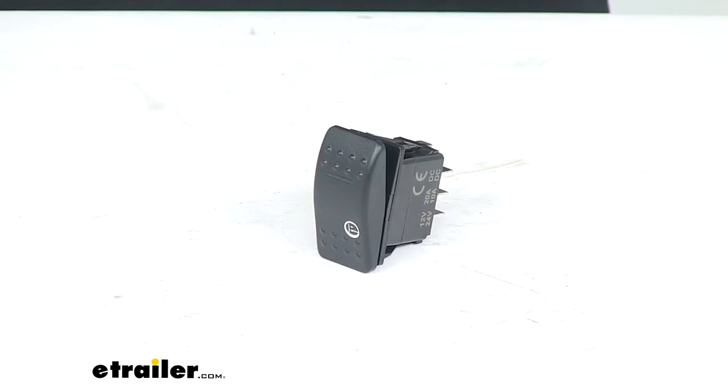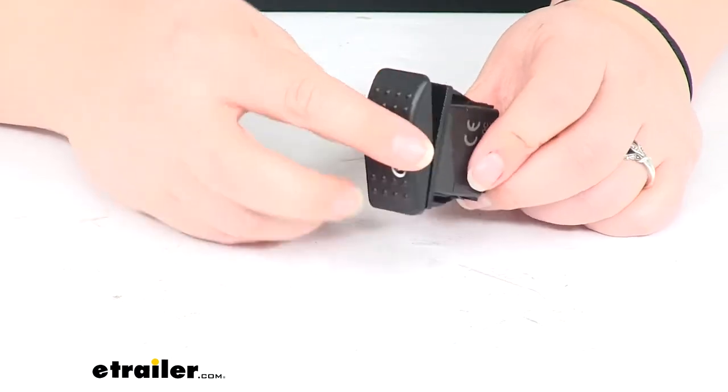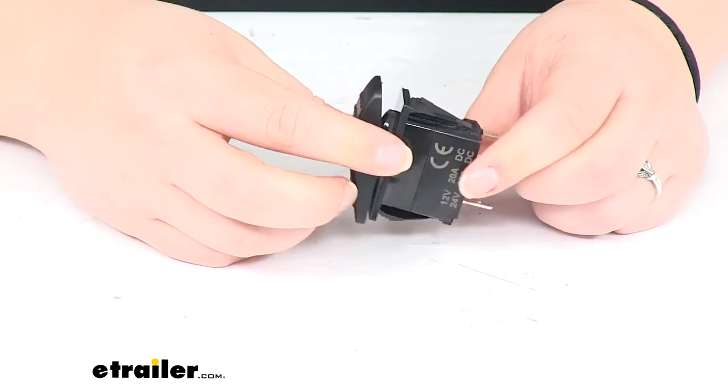Hey everyone, I'm Ellen here at eTrailer.com. Today we're taking a look at the replacement rocker switch. This is going to be a direct fit for the Bulldog winch part number BDW20266.